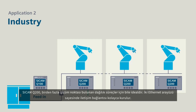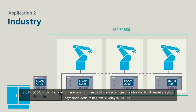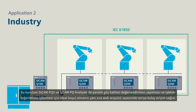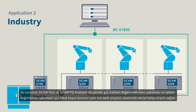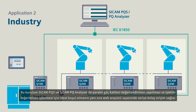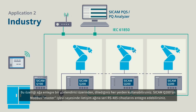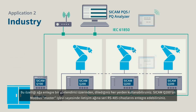Two Ethernet interfaces enable easy configuration of the communication connection — the ideal condition for parallel power quality evaluation and processing of operating values with Secamp PQS and Secamp PQ Analyzer, and also for easy access to data via the web interface. This functions wirelessly from virtually any location in the plant through a router integrated in the network.